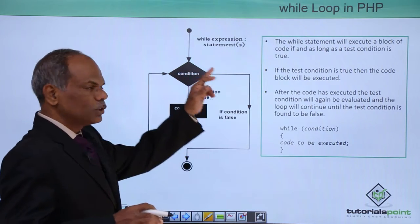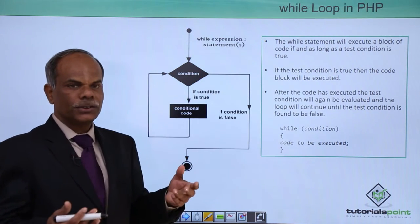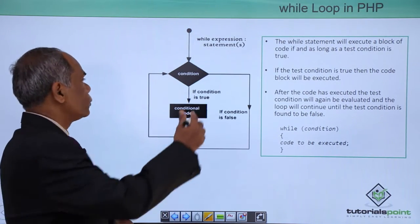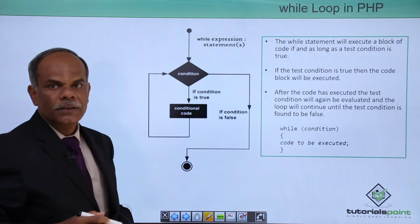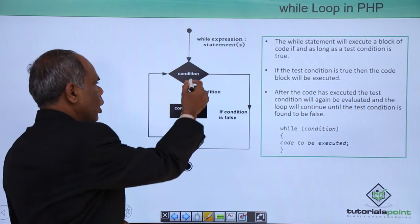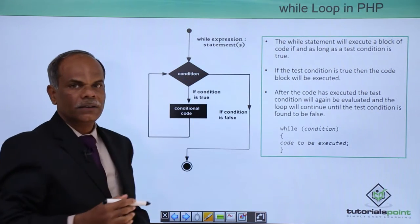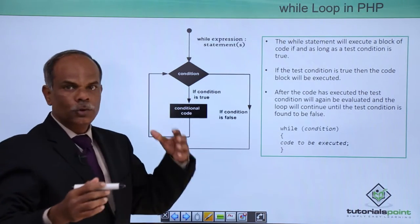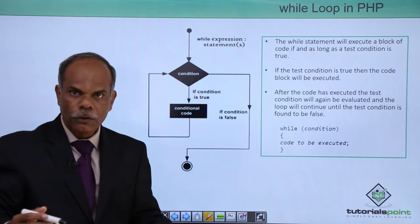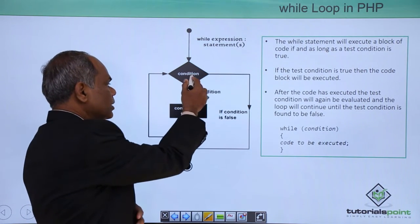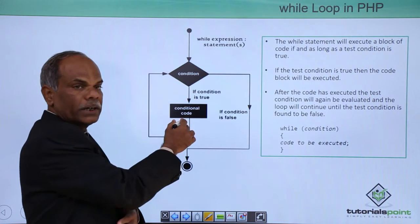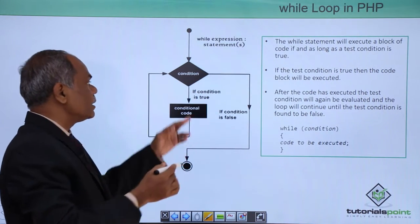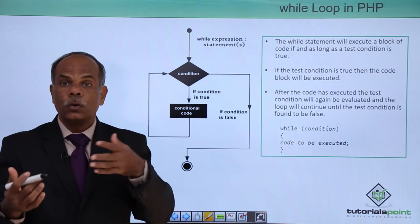This flowchart explains the use and behavior of the while loop. As the program enters the while loop, at the top there is a condition, and the condition initially has to be true to execute the following statements. If the condition is true, the conditional code is executed, and after the code is executed, the test condition is verified again whether it holds true or not.